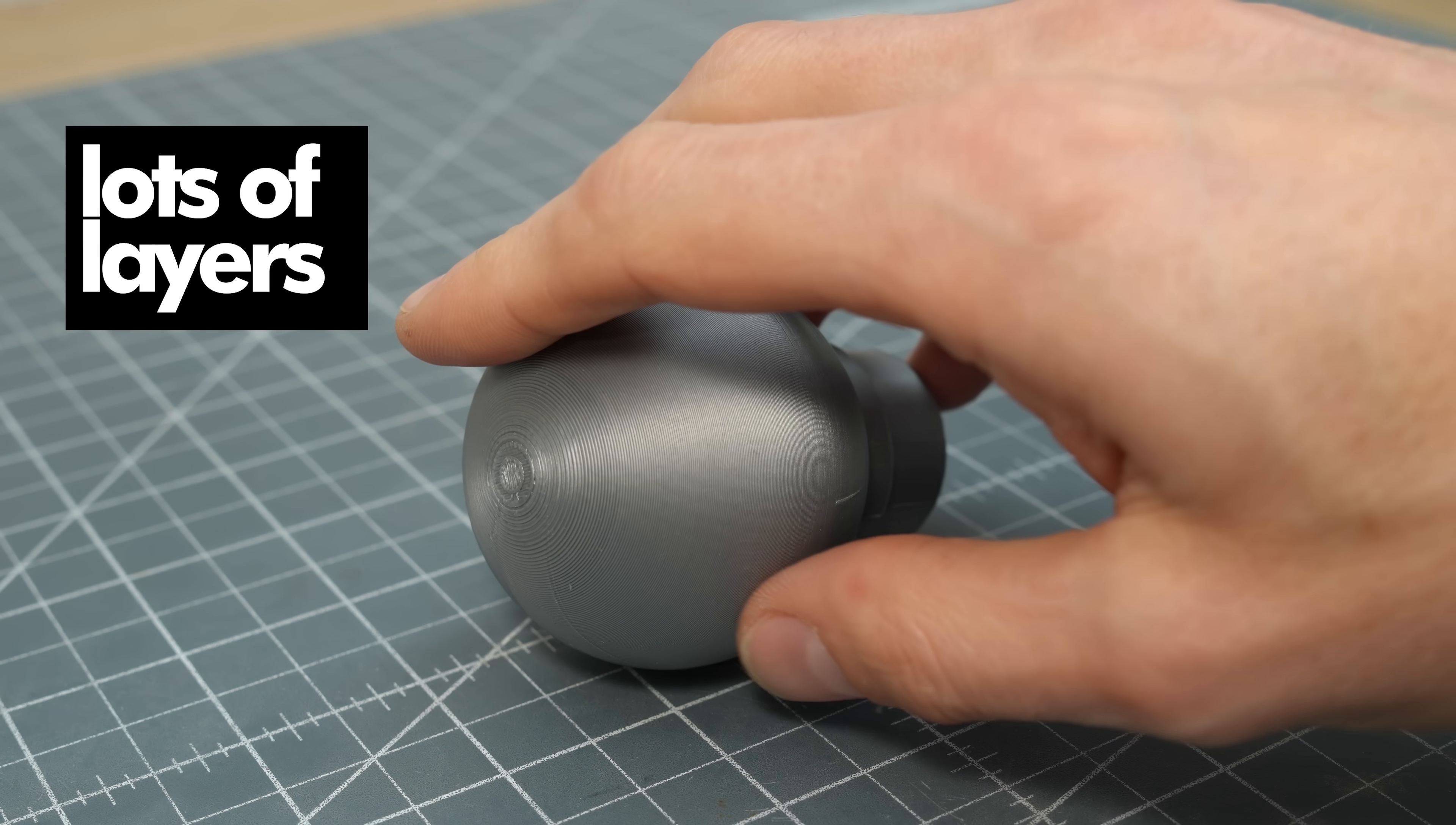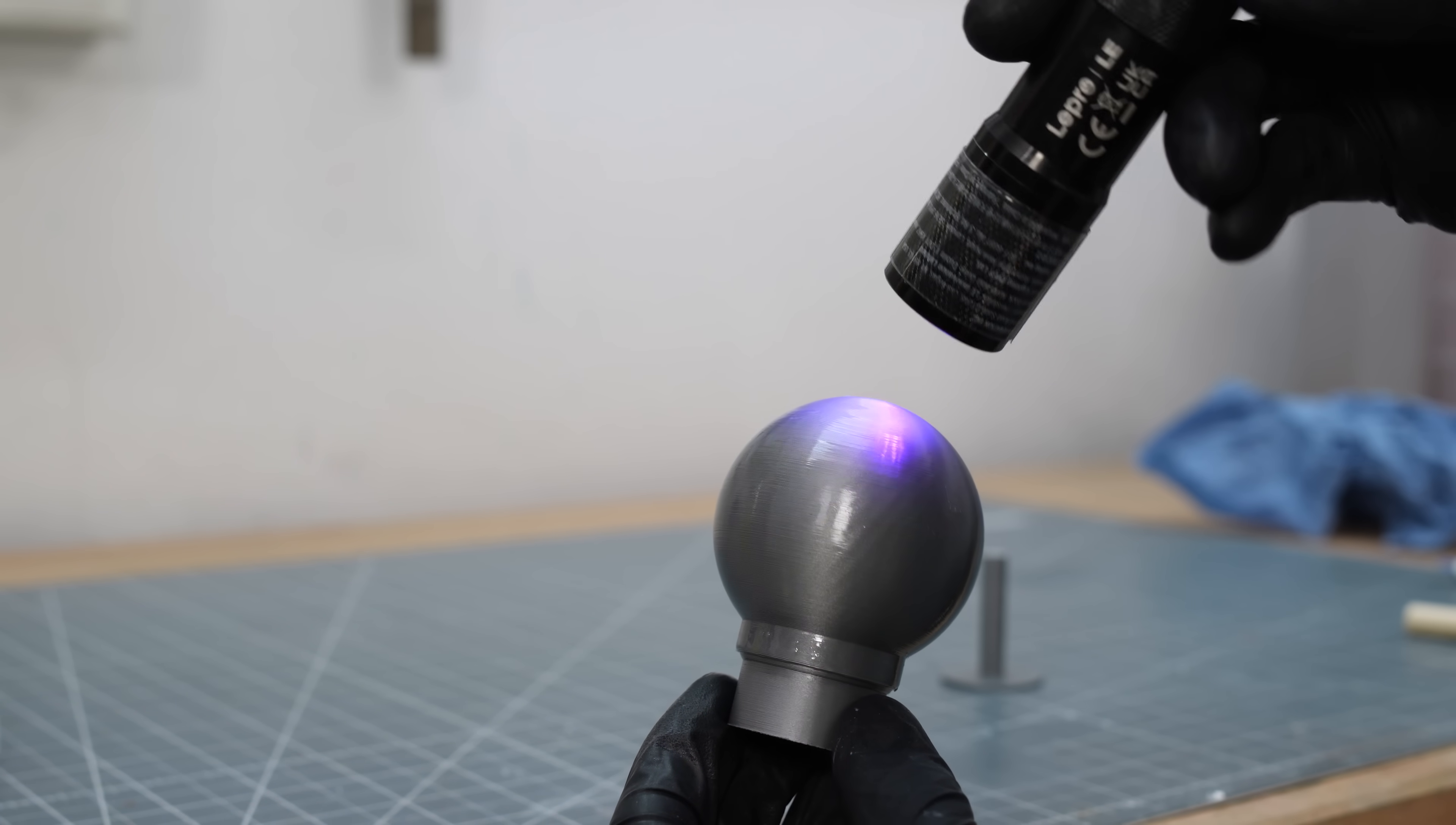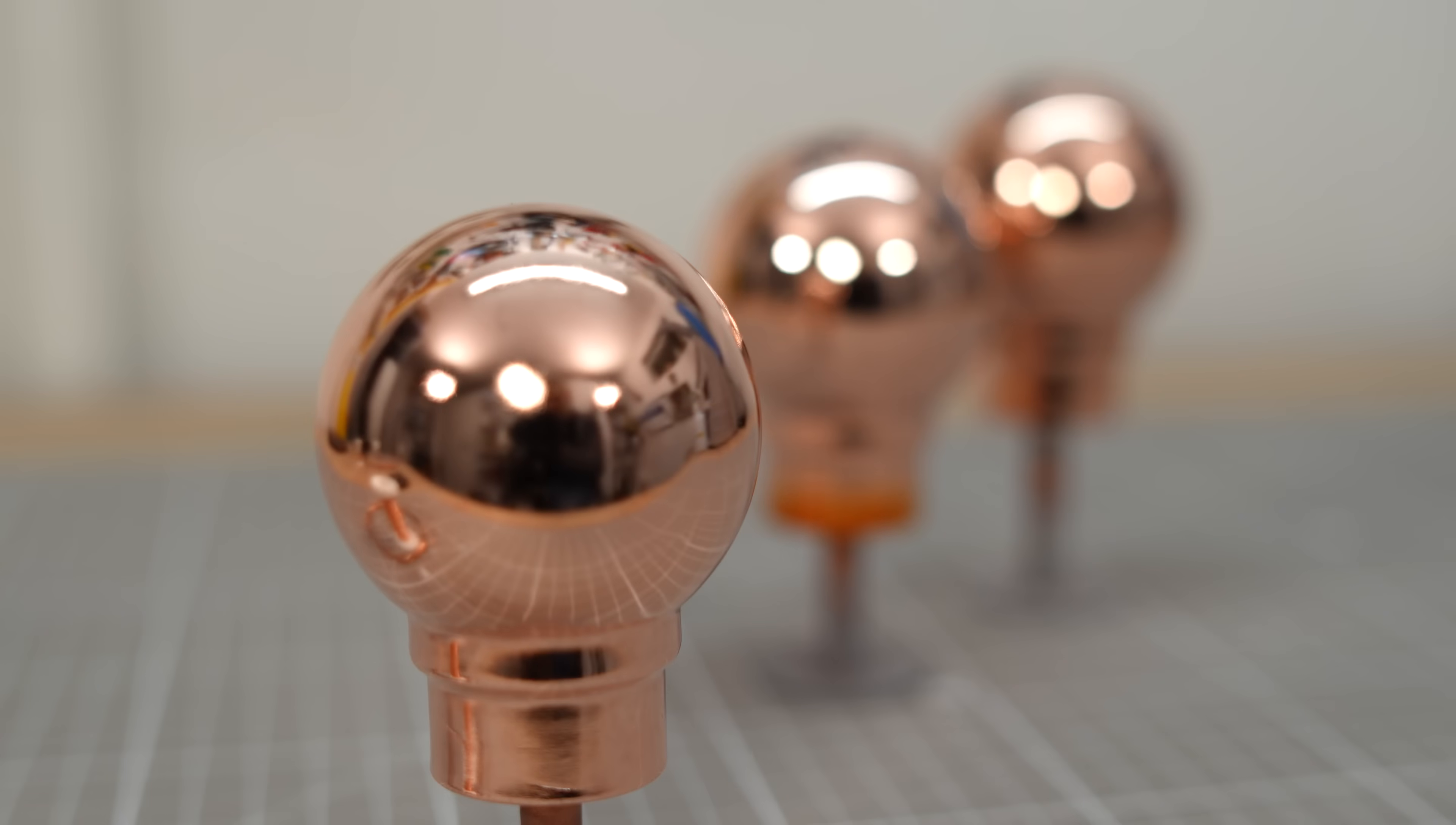Moin! In this basics video I show how to remove the typical layer look of FDM 3D prints and create the foundation for a mirror effect through electroplating. Additionally, I share a couple of do's and don'ts along with some important tips on what to consider when preparing 3D prints for electroplating. Let's go!